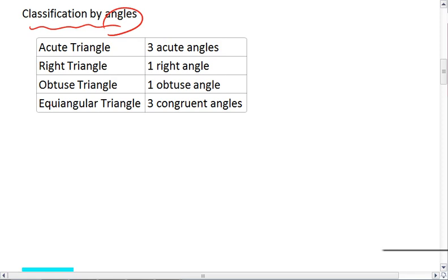For example, if we have a triangle that has three acute angles, so we'll say maybe 40 degrees, let's do 60 degrees, and we'll say that this one is also 60 degrees. Notice how every angle in this triangle is acute.